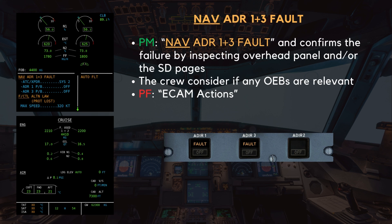In this case, two fault lights should be present on the ADR 1 and 3 push buttons. Notice that on the cruise page, the TAT, SAT, and ISA indications are replaced by amber crosses.